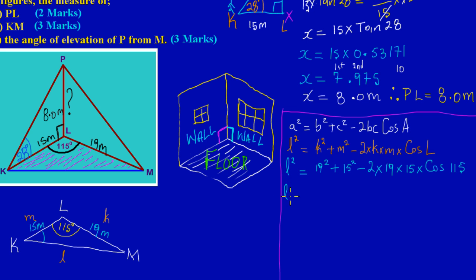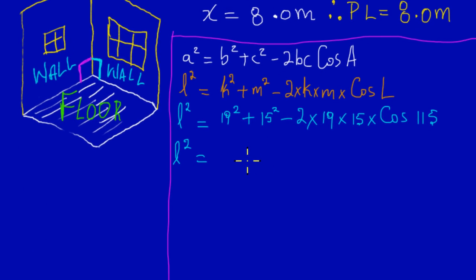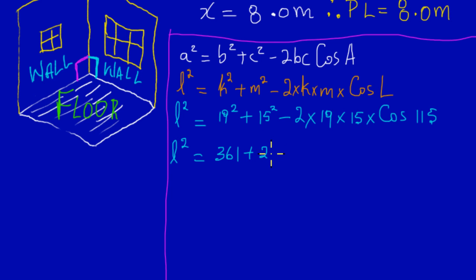Simplifying: 19 squared is 19 × 19, which gives 361. Adding to that, 15 squared is 15 × 15, which gives 225. So we have l² = 361 + 225 − 2 × 19 × 15 × cos(115°).